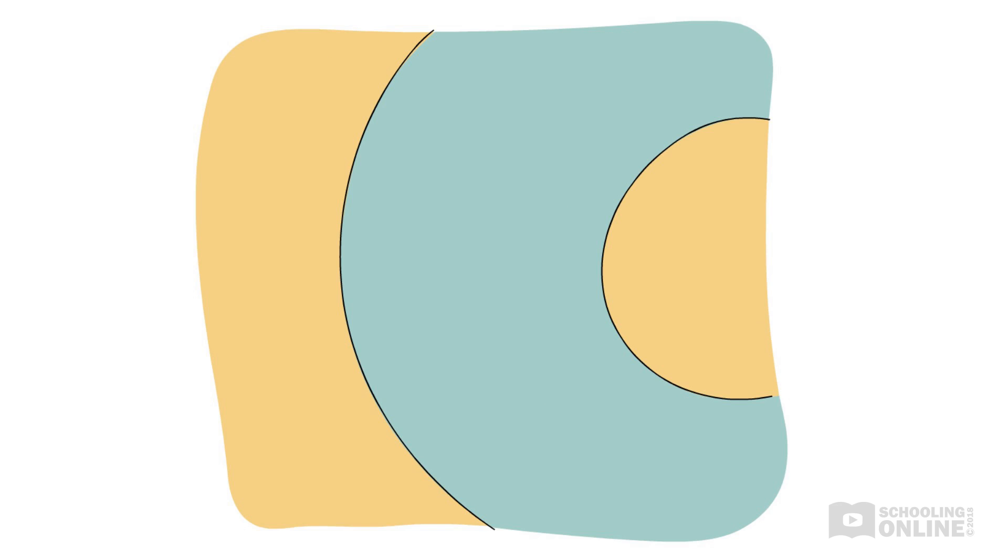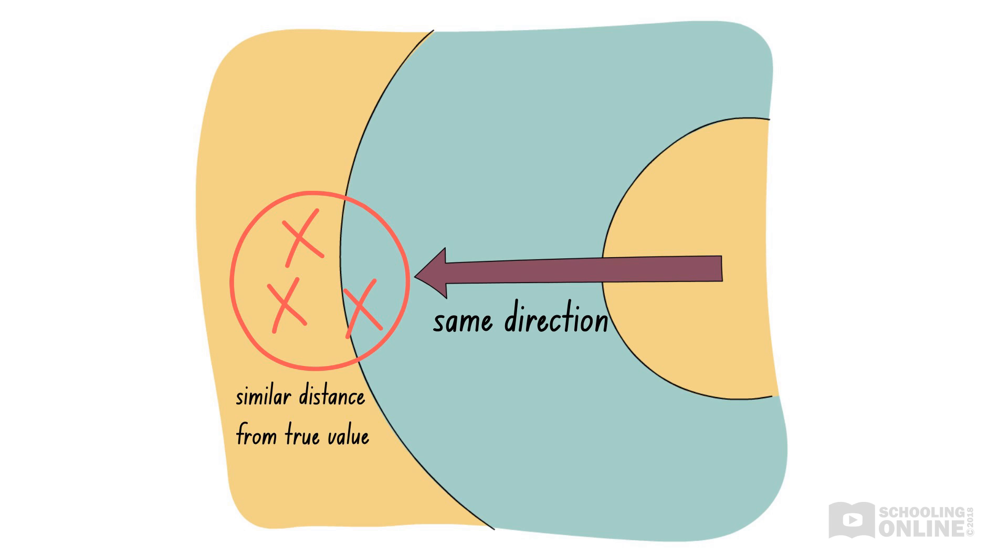This is a systematic error. Each time, the arrows are pushed in the same direction and are similar distances away from the true value. This systematic error has also made our data inaccurate, as our results have been pushed away from the true value, just like how the arrows have been blown away from the bullseye.